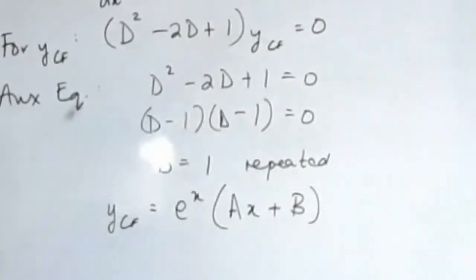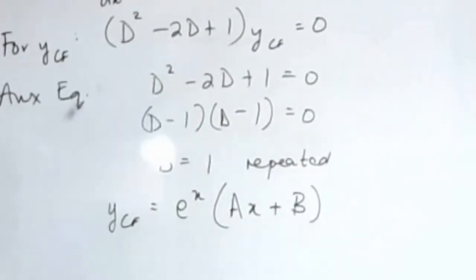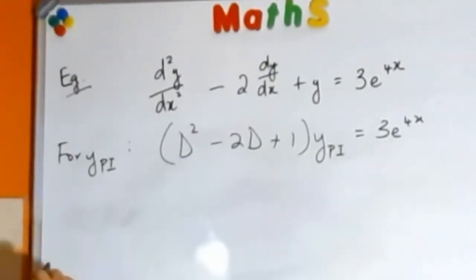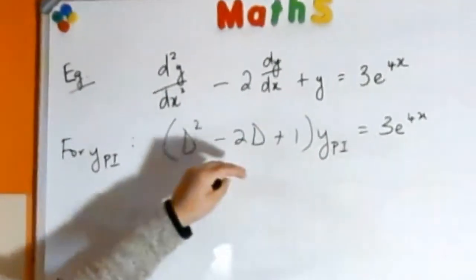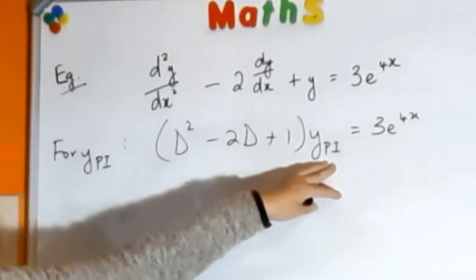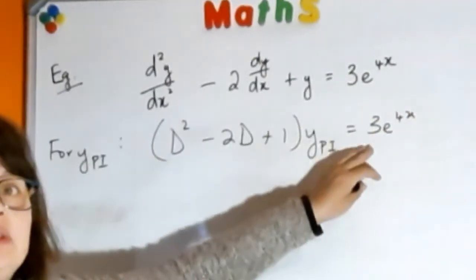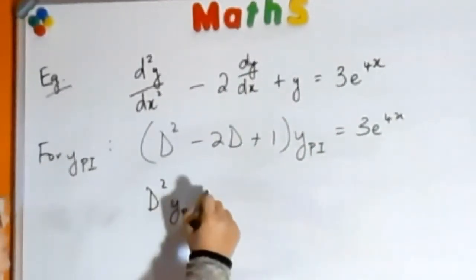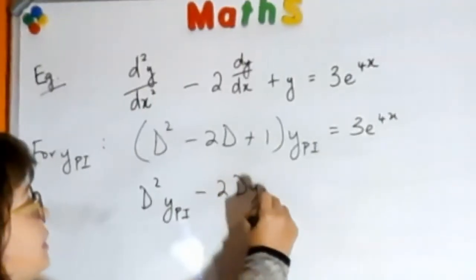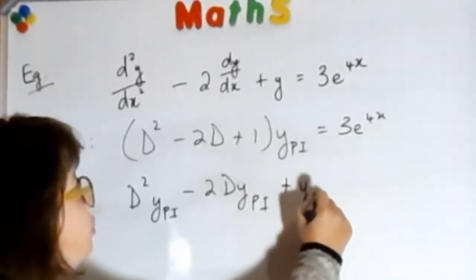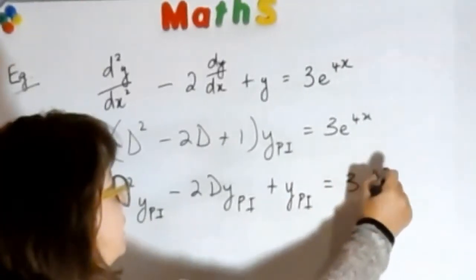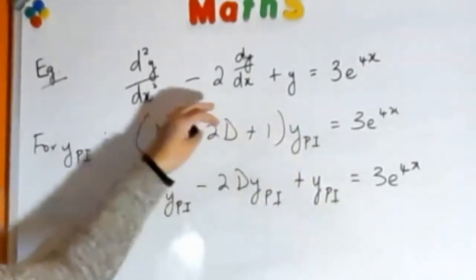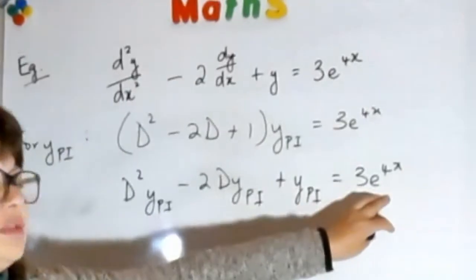All right, now let's have a look at our particular integral. Our particular integral is this expression in the bracket times y_pi has to give you the function 3e to the 4x, so that means you need to find an expression for y_pi so that if you get your first derivative and your second derivative and you substitute into the equation, the equation has to balance, which means your left hand side has to simplify down to this value here.